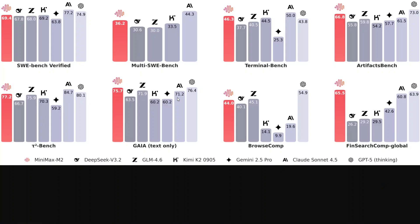Looking at the benchmarks, this orange line beats SWE-bench (software development), Terminal Bench, Artifacts Bench, Tower Bench, GAIA, and even on agentic behavior, browsing capabilities, and FinSearch — it is leading everywhere. It is able to beat out DeepSeek, GLM, and Kimi, and is just behind Anthropic's Claude 4 and OpenAI's GPT models. It is right now the best open source model especially for coding.